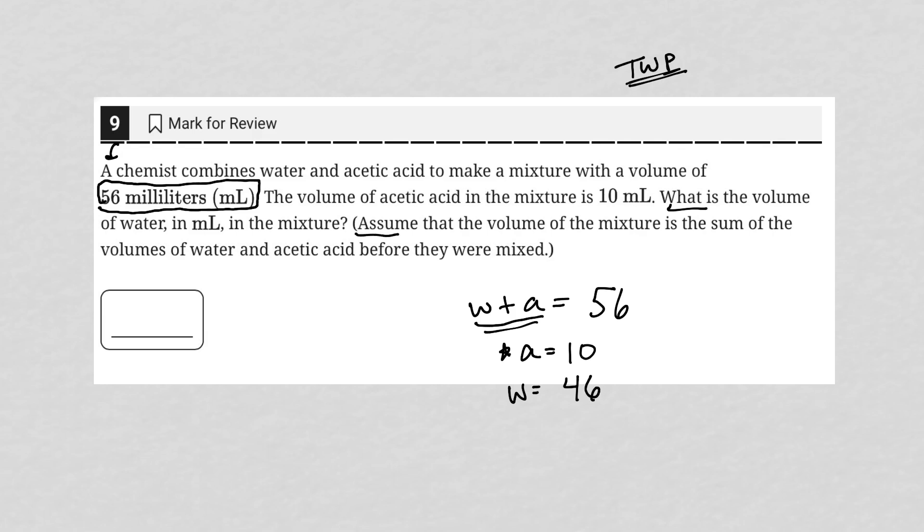Right. And it goes on to say, assume that the volume of the mixture, right, the 56 is the sum of the volumes of water and acetic acid before they are mixed. So the sum of 10 plus 46 is 56, in case we needed more help with answering this question correctly. So the answer here is 46.